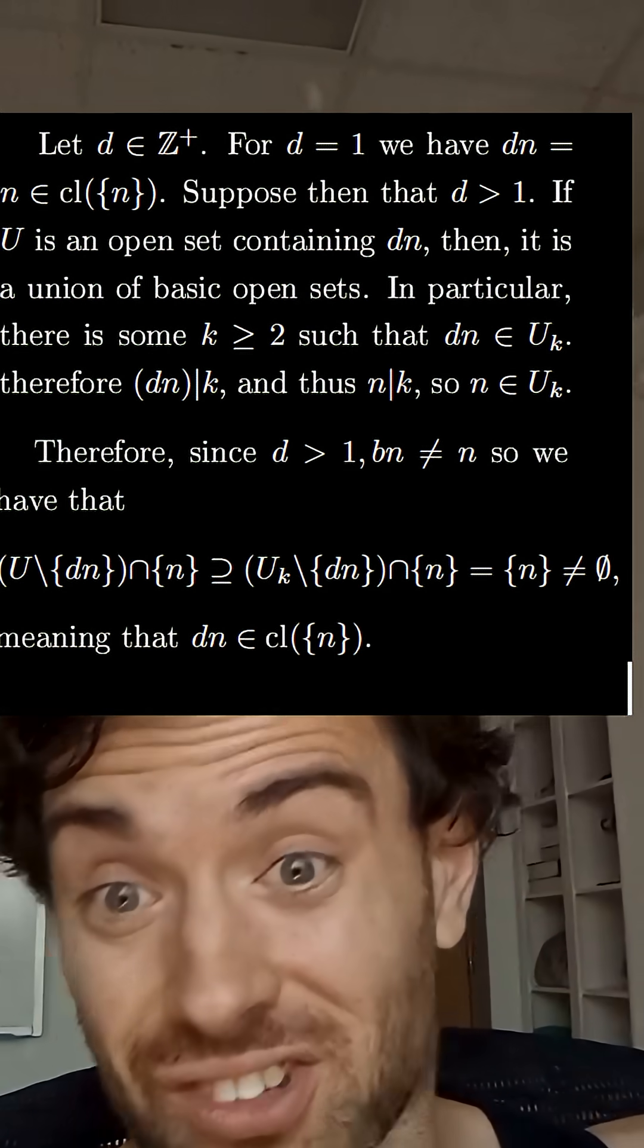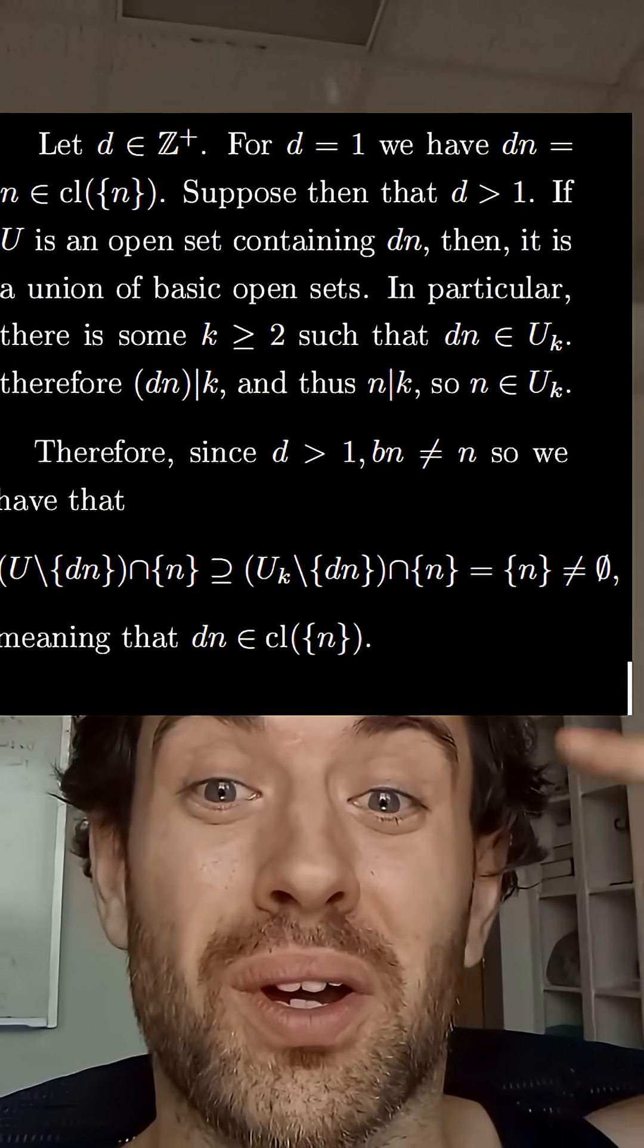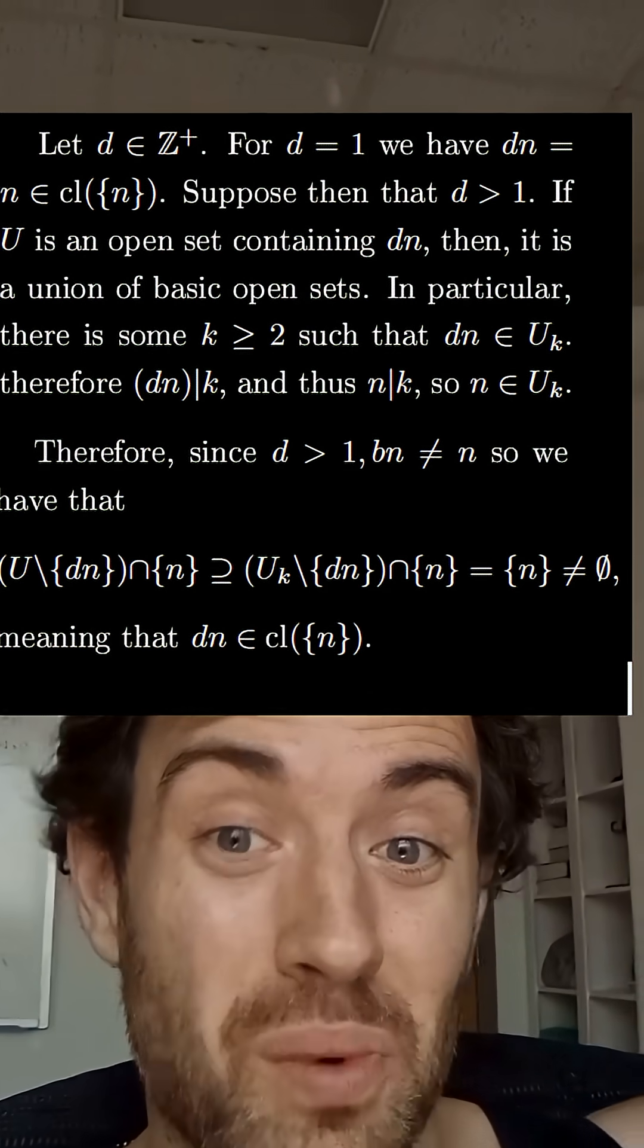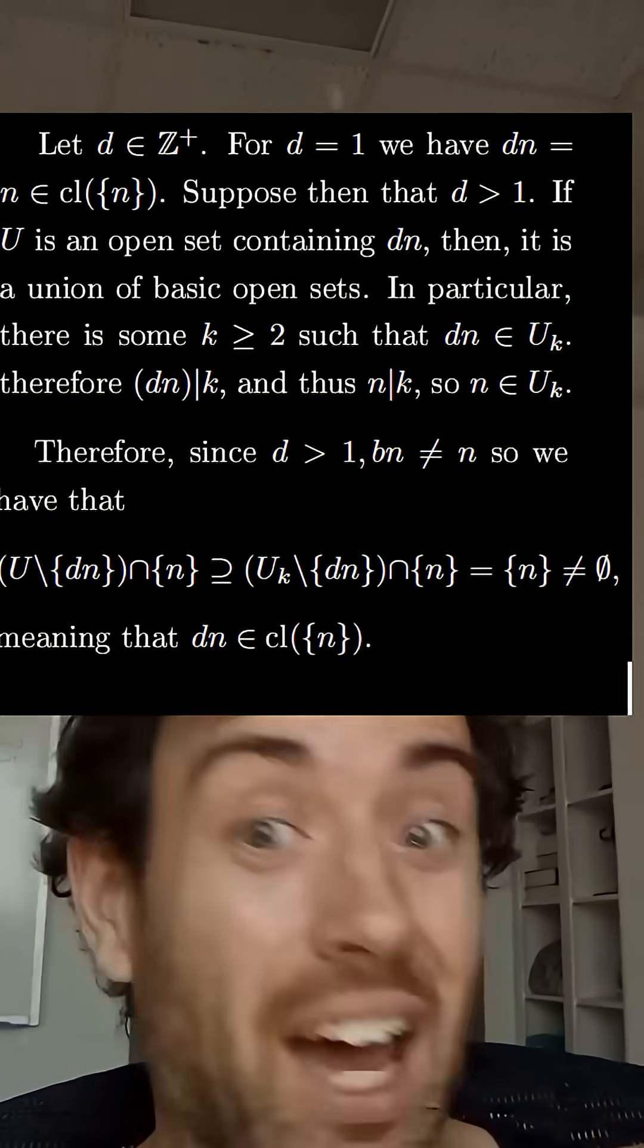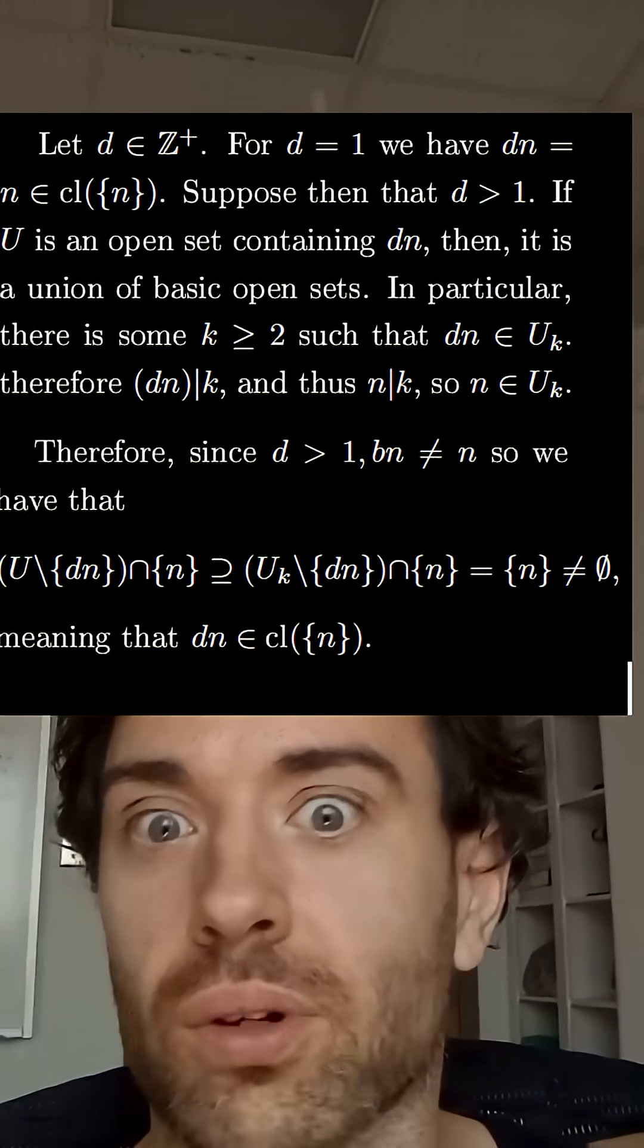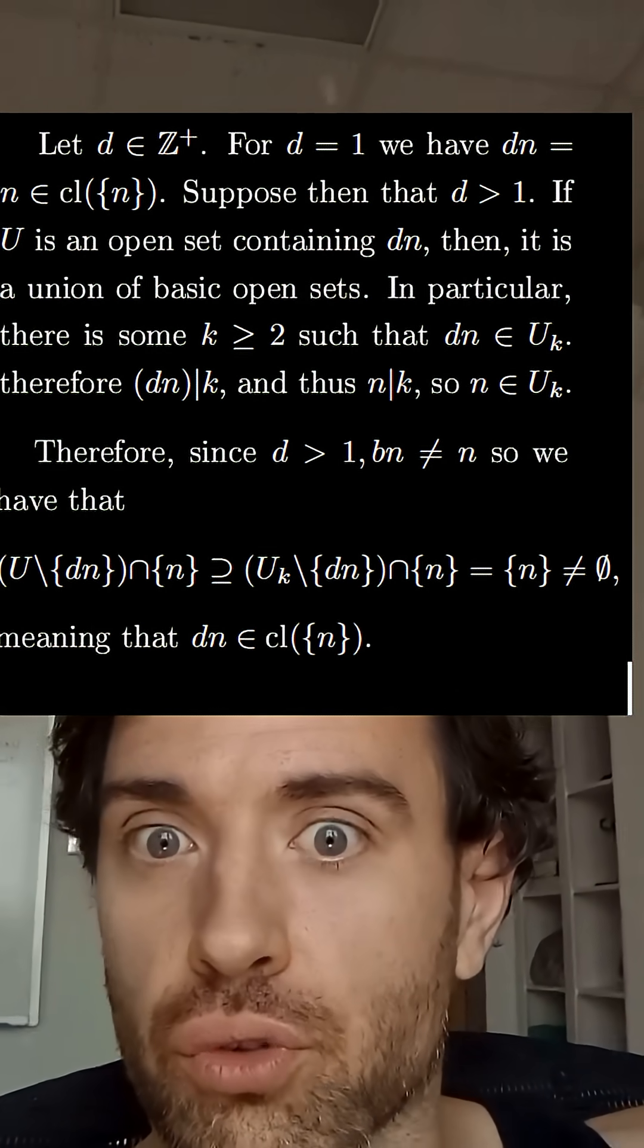So in other words, the intersection of U minus dn with the set containing n has to be non-empty, so therefore dn is an element of the closure.